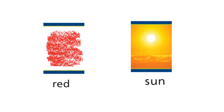Now look at these pictures and try to see the difference. Do you know what color this is? Yes, it's red. R-E-D. Look at the word red — R-E-D. Red. The word red does not have the sound A in it. Now look at this picture. Do you know what this is? Yes, it's a sun. S-U-N. Sun.